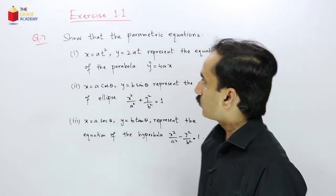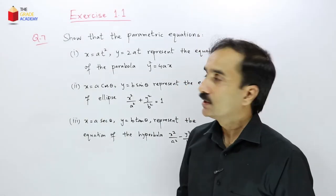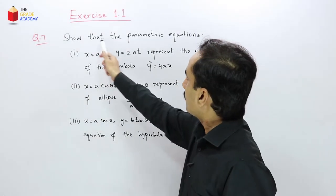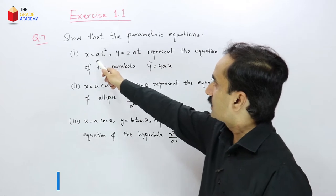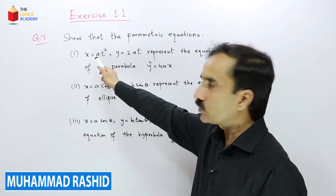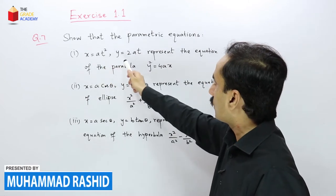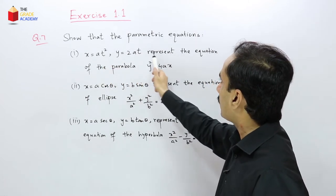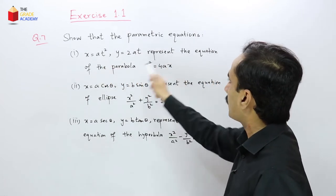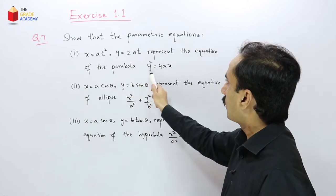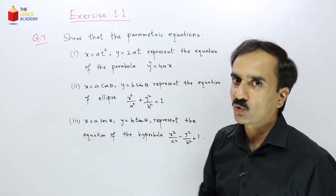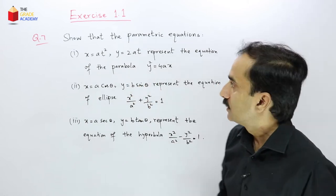Question number seven: show that the parametric equations x = at² and y = 2at represent the equation of the parabola y² = 4ax.